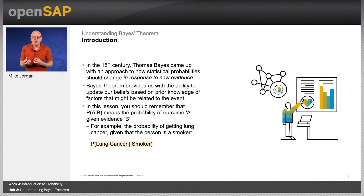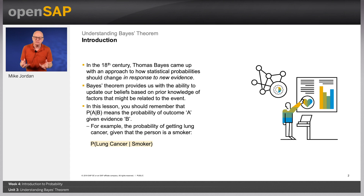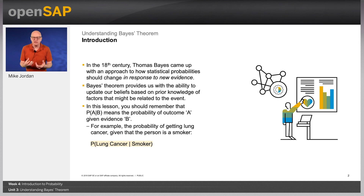Bayes' Theorem provides us with the ability to update our beliefs based on prior knowledge of factors that might be related to the event. Very often we want to calculate the probability based on some prior information. We started looking into this when we looked at some conditional probability, and here we are going a little bit deeper into how to calculate probabilities based on that prior information.